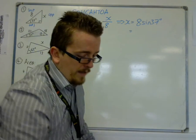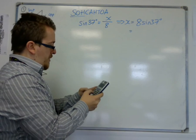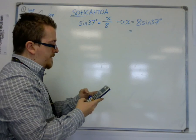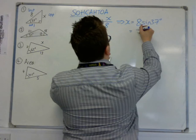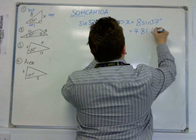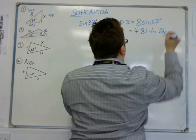So we plug that into our calculator. 8 times sine of 37 degrees, which is 4.81 to 2 decimal places.